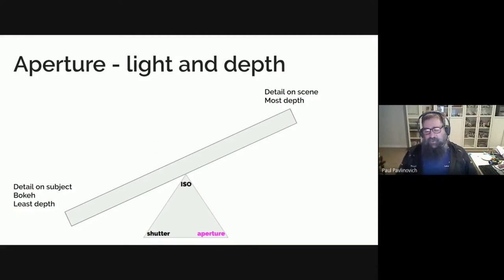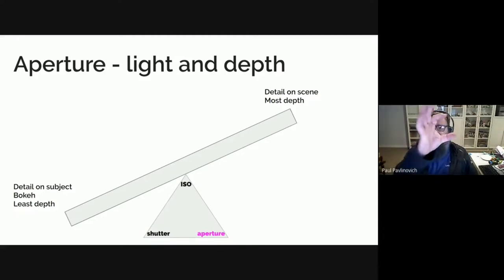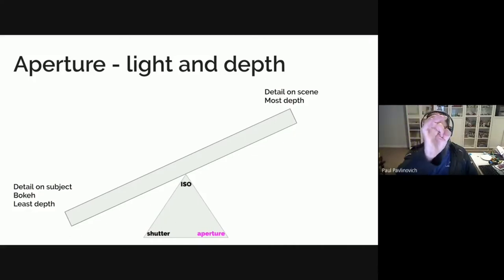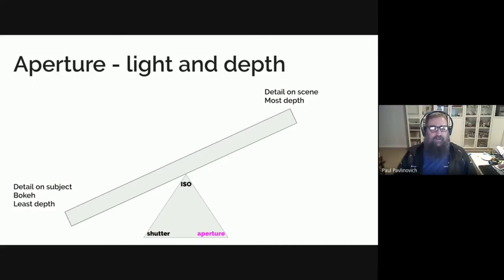This gets a little bit weird and it confuses people: the small aperture is the really big hole, and the big aperture is the little tiny hole. I'll cover that in a little bit more detail in a moment.